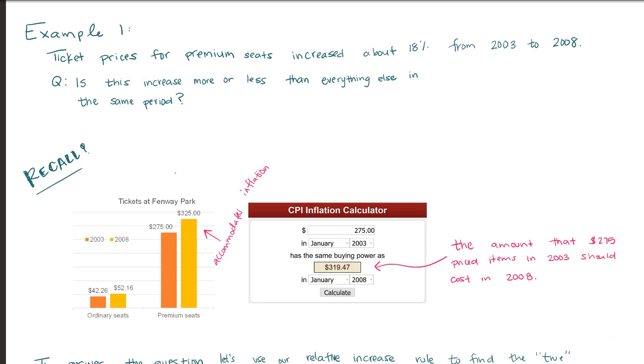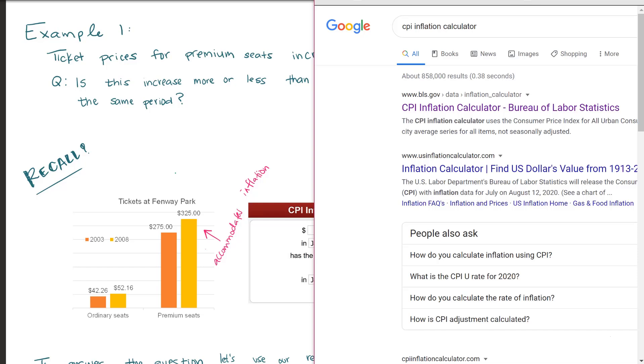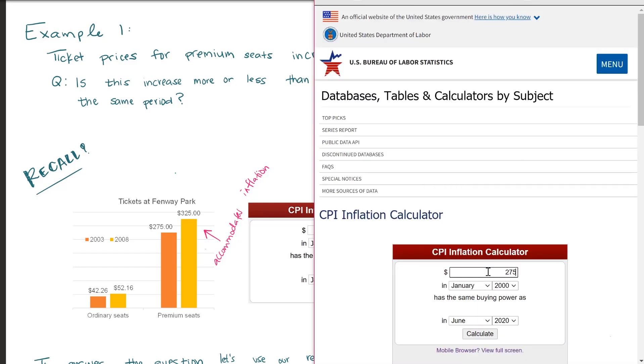Now, to begin, we want to use the CPI inflation calculator. And to use this calculator, we can go to a link, or we can Google. You're going to be using this on your homework, so let's explore using this together. You can Google CPI inflation calculator. It's the first link.